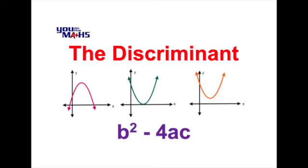In this video we're going to look at the discriminant, which is b squared minus 4ac, and as we'll see later, it's part of the quadratic formula used to solve quadratic equations. From the graphs we can see three possible scenarios for where a parabola may cross the x-axis: two solutions on the left diagram, one solution in the second, and no solutions in the third.